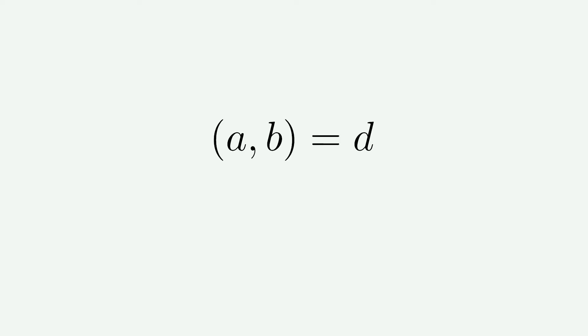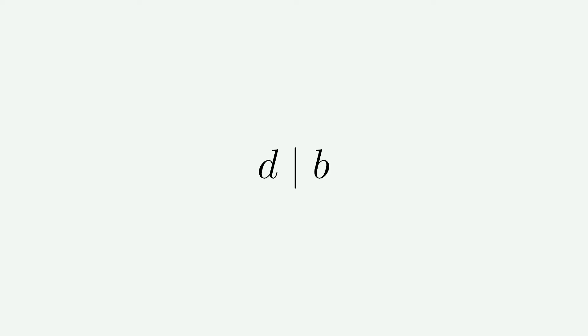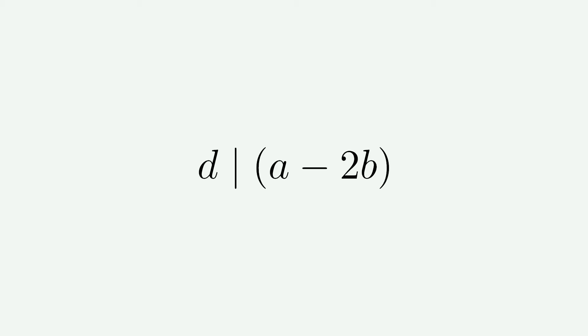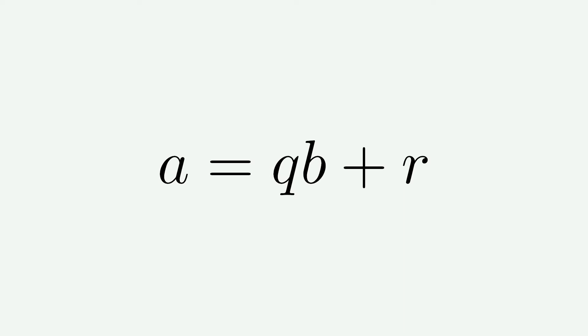From now on I'm going to call the highest common factor d, and we might as well assume that a is greater than b, otherwise we could just swap them around. Here's the idea: d divides a and it divides b, so it divides a minus b. But it also divides a minus 2b and a minus 3b and so on. So we can keep subtracting copies of b until we get to the smallest non-negative remainder, say r. So we can write a equals q times b plus r, and d divides a and b, so it must divide r too.